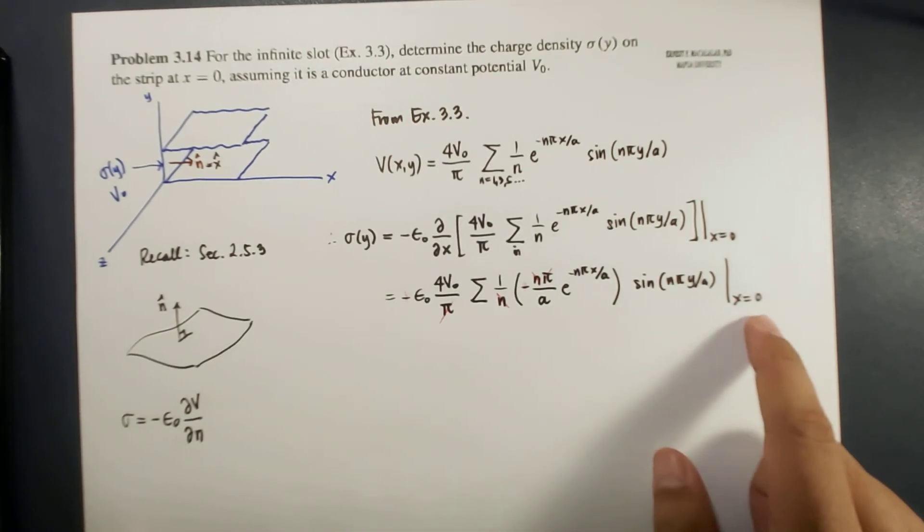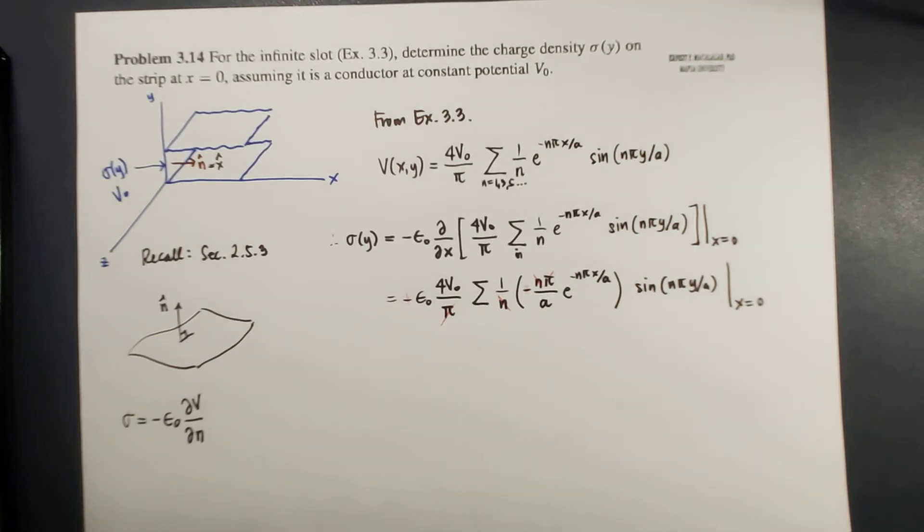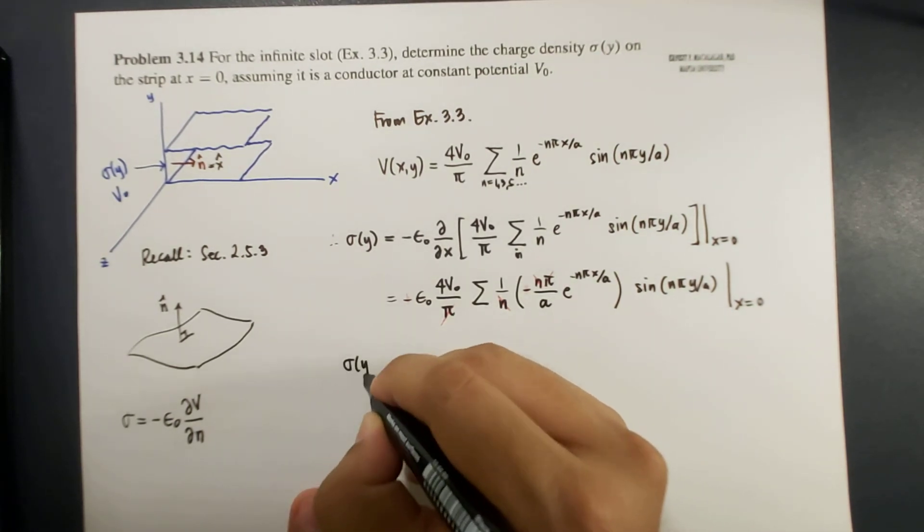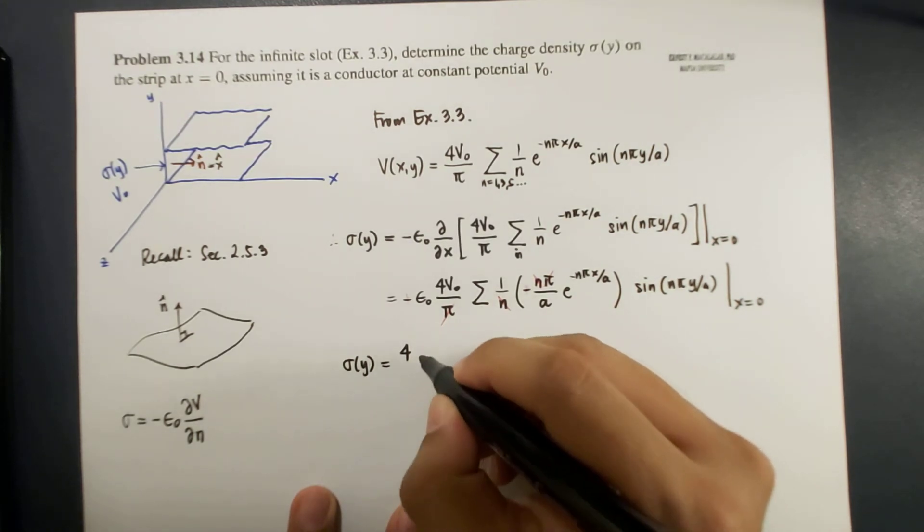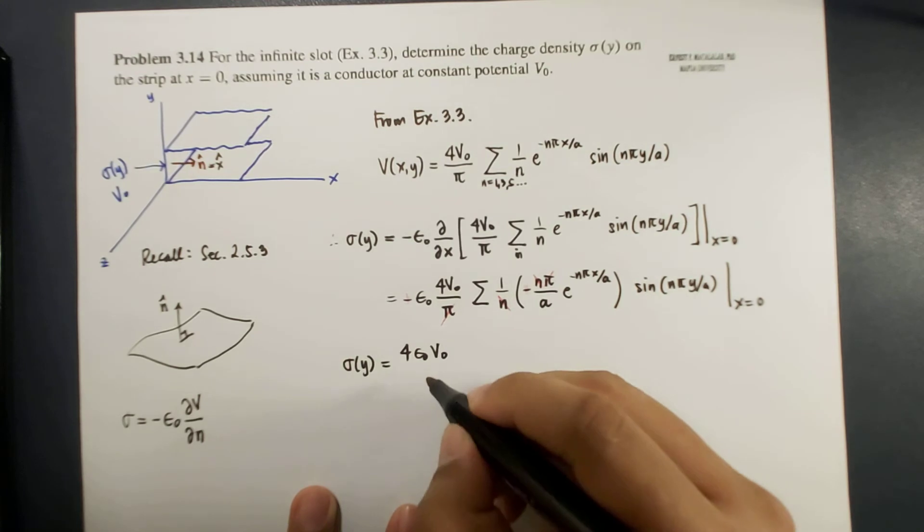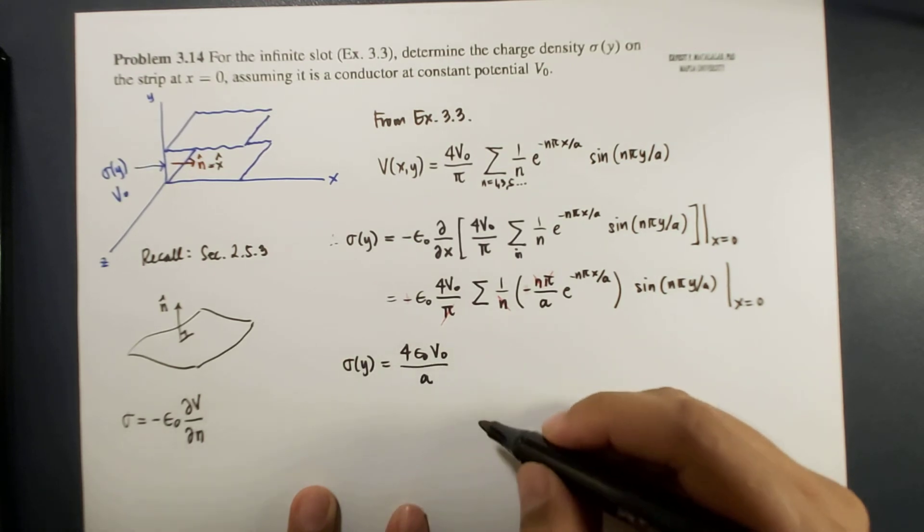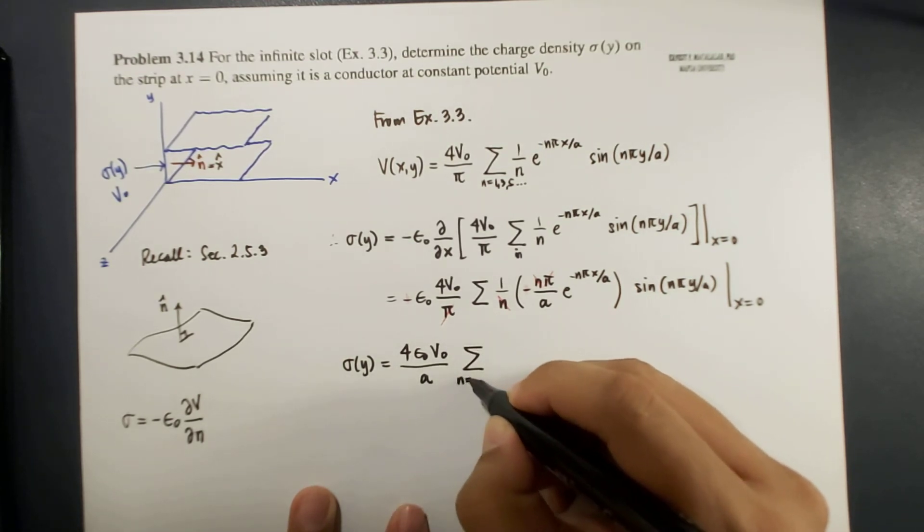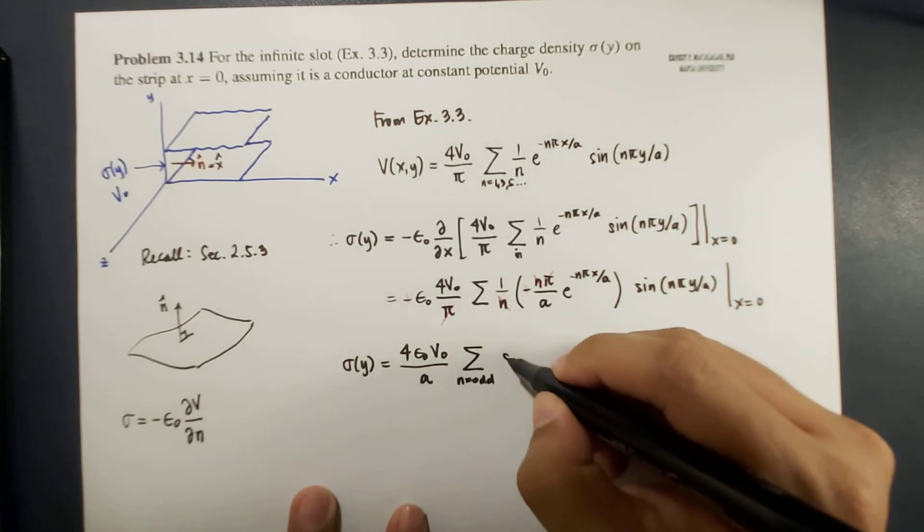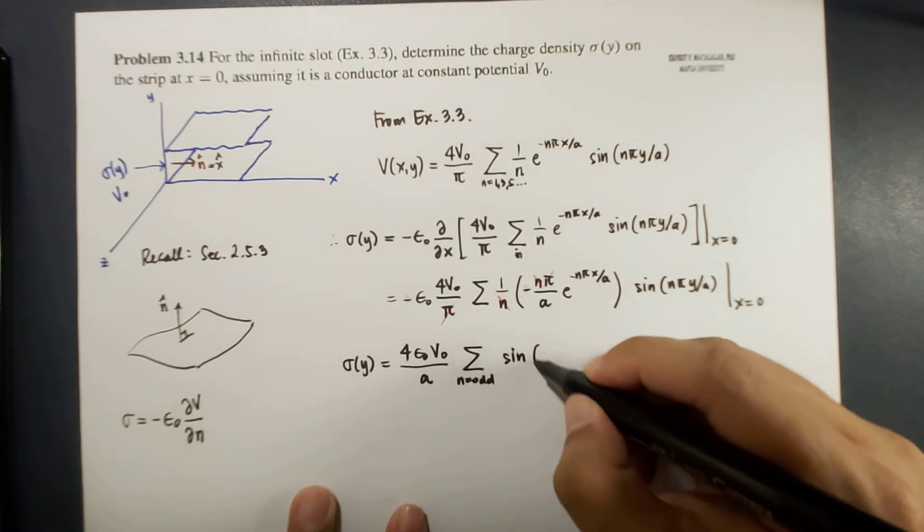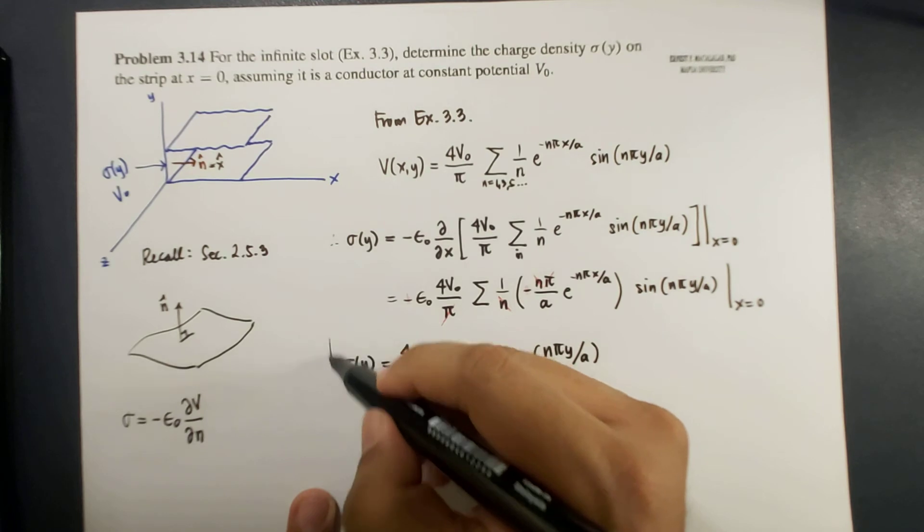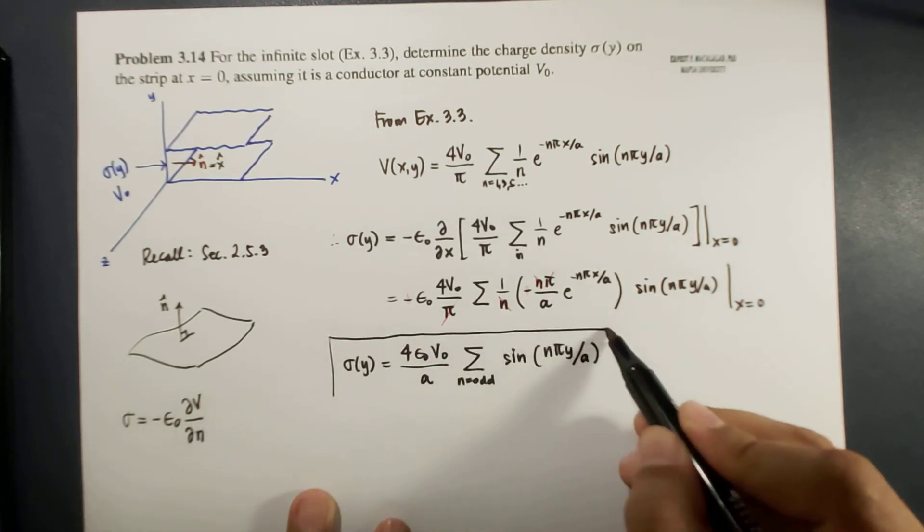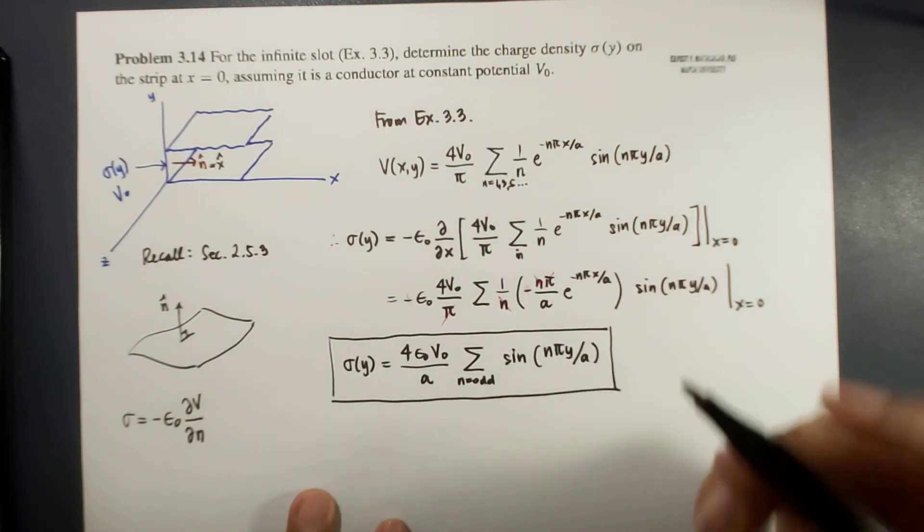Okay, so the final answer would be sigma as a function of y is equal to 4 times epsilon naught V0 over a times the sum of n for odd integers and sine n pi y over a. So this is our answer.